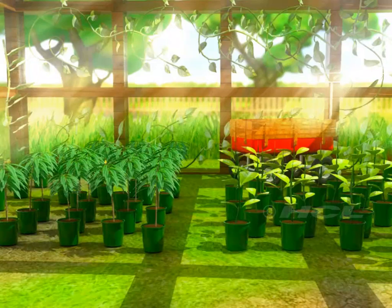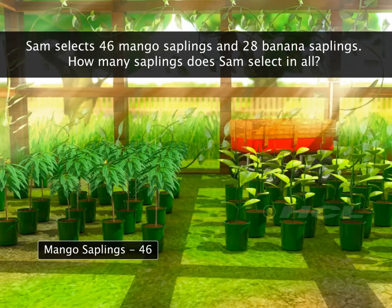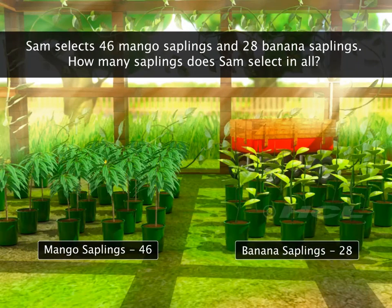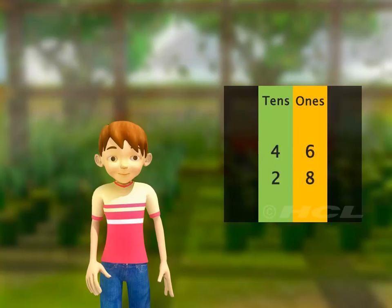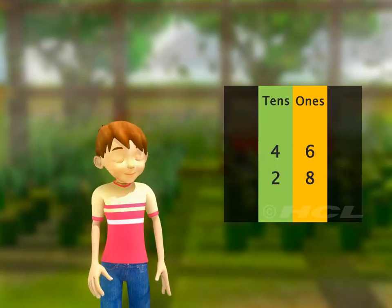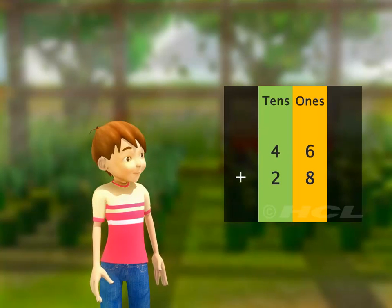Sam selects 46 mango saplings and 28 banana saplings. How many saplings does Sam select in all? To find the answer, we have to add 46 and 28.